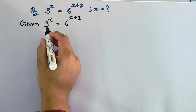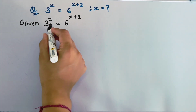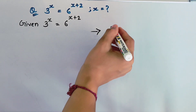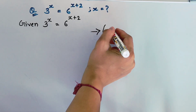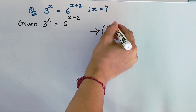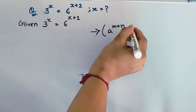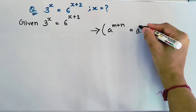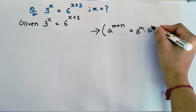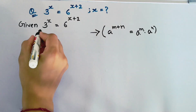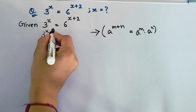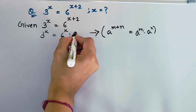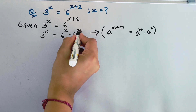By looking at this equation, we have a common rule of exponent: a to the power m plus n equals a to the power m into a to the power n. So, 3 to the power x equals 6 to the power x into 6 to the power 2.